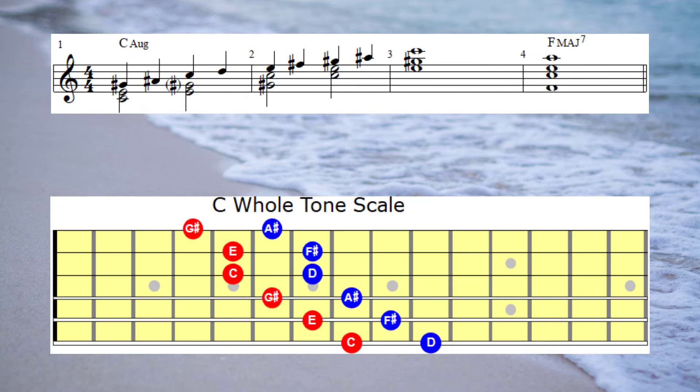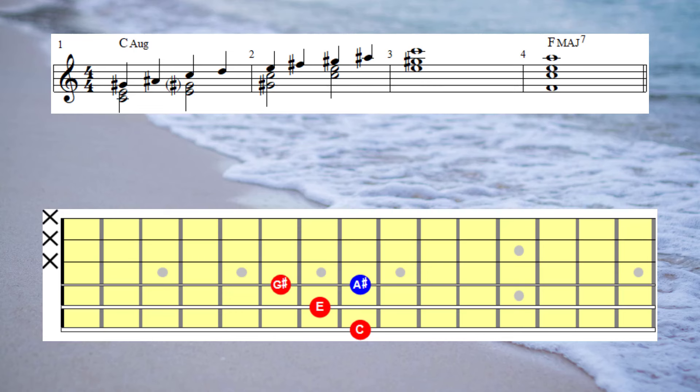In this next diagram the augmented triads are indicated by red dots, and the notes of the whole tone scale that are not part of the C augmented triad are marked by blue dots. Our next project will be to link the augmented chords together with notes from the whole tone scale. In this example I'm thinking of C seventh resolving to F. Therefore our augmented triads plus the notes from the whole tone scale are providing a C seventh altered type sound. Let's have a listen.